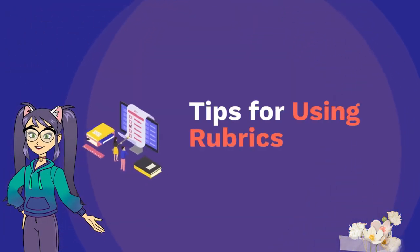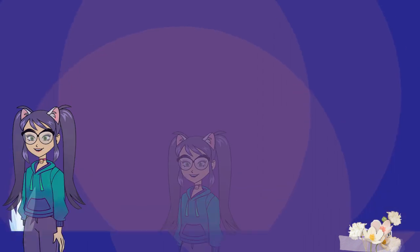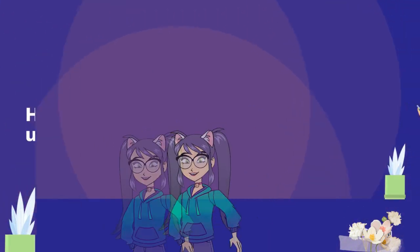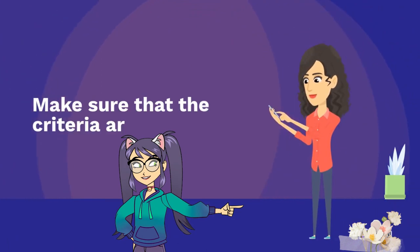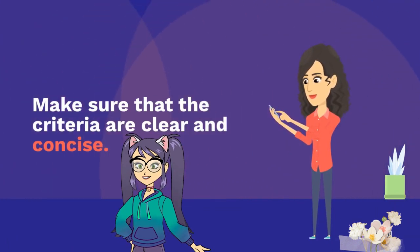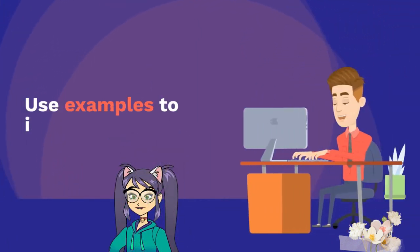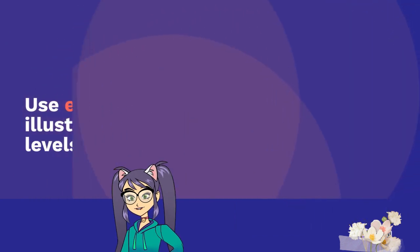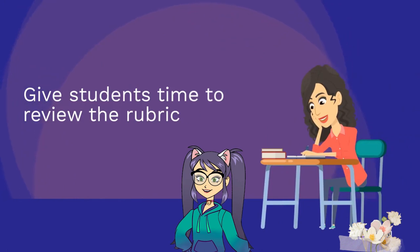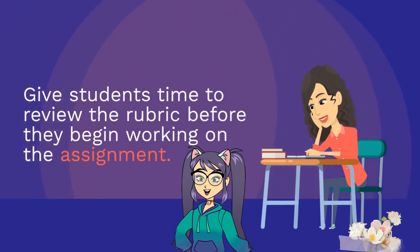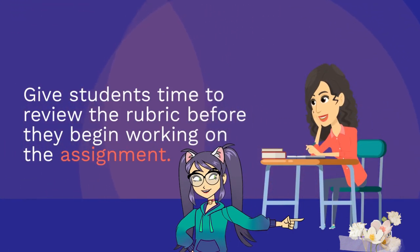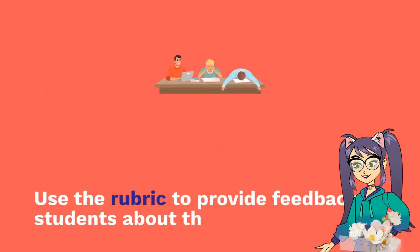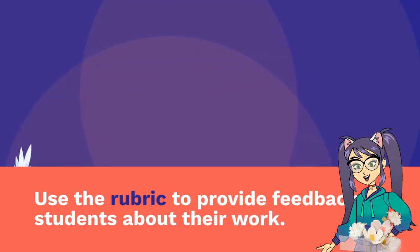Now, what are some tips for using rubrics? Here are a few tips: Make sure that the criteria are clear and concise. Use examples to illustrate the different levels of performance. Give students time to review the rubric before they begin working on the assignment. Use the rubric to provide feedback to students about their work.